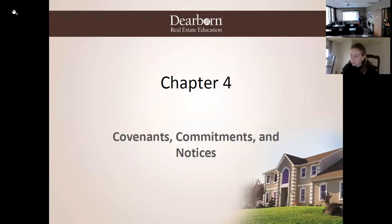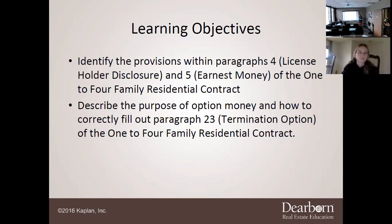Learning objectives: today we're going to identify the provisions within Paragraph 4, the License Order Disclosure — which is not Paragraph 4 anymore — and Paragraph 5, the earnest money of the 1-4 Family Residential Contract. The option money is now in Paragraph 5, not 23. They just put out a new contract so the paragraph numbers are jumbled up, but I'll clarify those as we go through the slides.